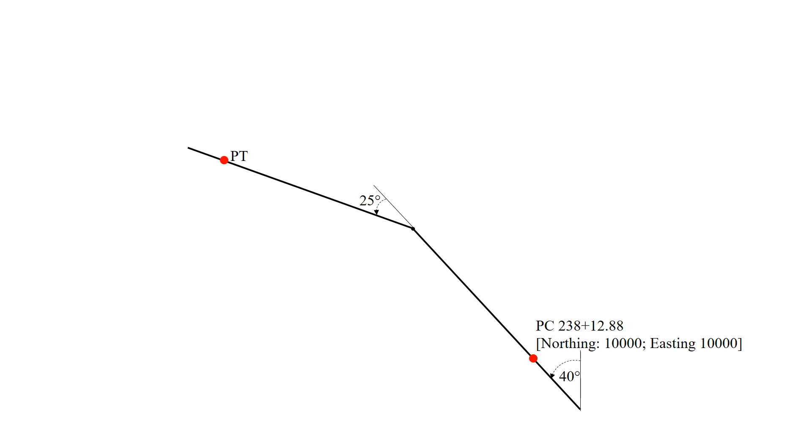We can determine where this curve is located. So we have a simple arc of a curve that connects the PC and the PT. We can determine that length with our equation radius times delta times pi over 180. So 2000 feet times 25 degrees times pi over 180 gives us a length of 872.66 feet.